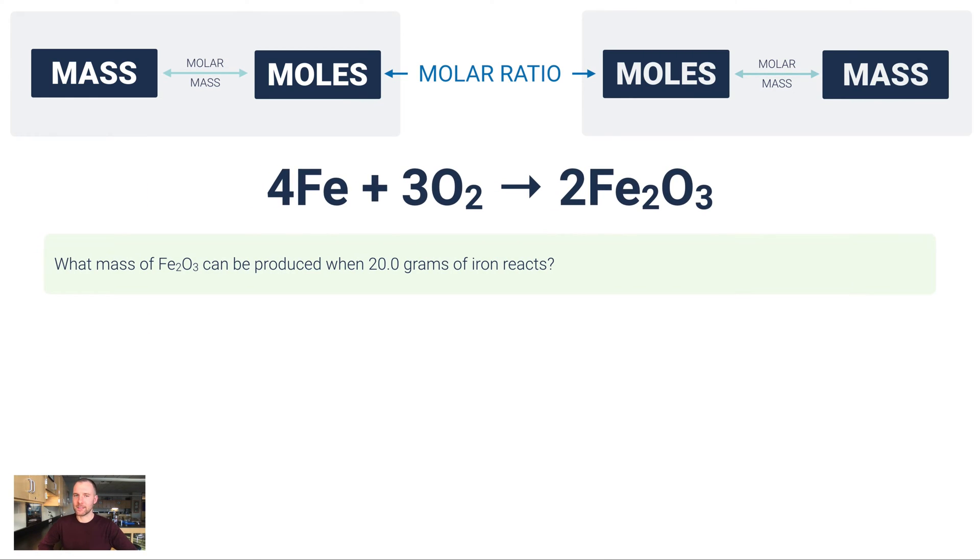Speaking of doing a mass-to-mass stoichiometry problem, let's start with this example here. I've given you a balanced equation: this is iron reacting with oxygen to form iron(III) oxide. And it says what mass of iron(III) oxide can be produced when 20 grams of iron reacts? Now we're assuming that that 20 grams of iron is going to react completely, in other words there's plenty of oxygen there to react away all 20 grams.